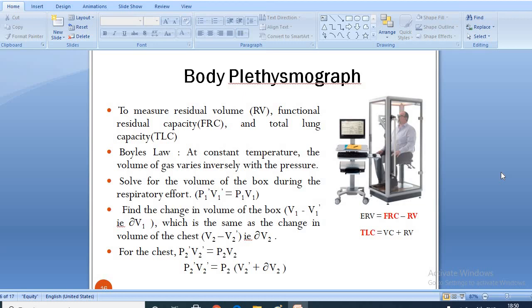In a traditional plethysmograph, the test subject or patient is placed inside a sealed chamber, which is an airtight box with a single mouthpiece. Utilizing Boyle's law that is at constant temperature, the volume of gas varies inversely with the pressure. The ratio of the change in lung volume to change in mouth pressure is used to determine the thoracic gas volume.